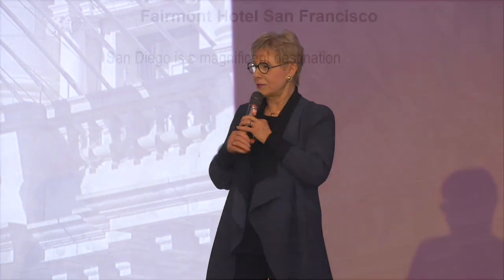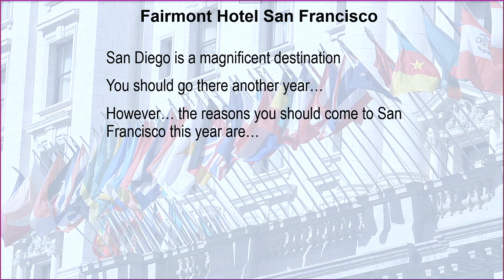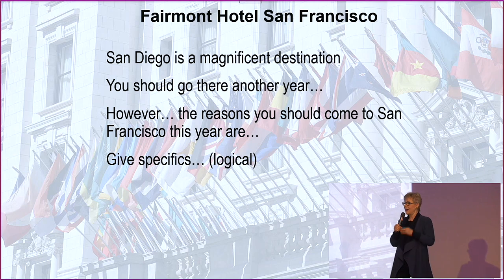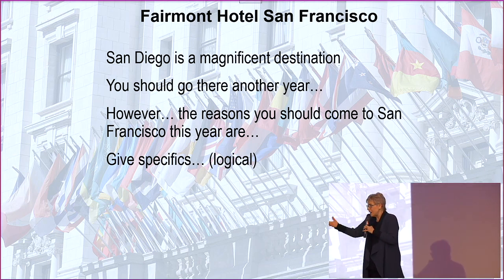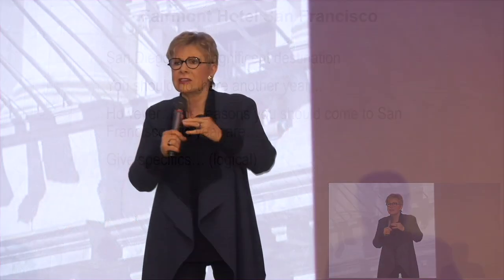However, you have to give some logical reasons that this committee can go back to the association staff and tell their members why they selected this location. So, you might want to consider saying, 'San Diego is a magnificent destination — and you should go there another year. However, the reasons you should come to San Francisco this year are...' Then give logical, specific reasons — it could be the time of year offers the most reasonable hotel room prices, or the Chinese New Year means lots of activities in the city, or the de Young Museum has just reopened and would be a great off-site location at a very reasonable cost.